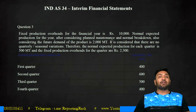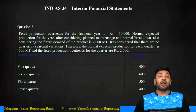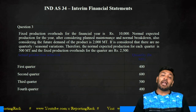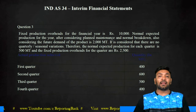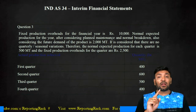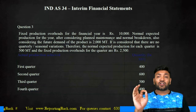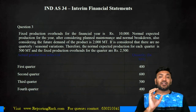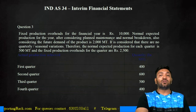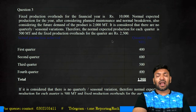Now let's look at interim financial statements. Production overheads for the financial year are 10,000. Normal expected production for the year — after considering planned maintenance, normal breakdown, and future demand — is 2,000 metric tons. Fixed production overheads per metric ton is therefore 5 rupees. With no quarterly or seasonal variation, normal expected production of each quarter is 500 metric tons, so fixed production overhead per quarter is 2,500. Actual production achieved is: 400, 600, 500, and 400 metric tons.